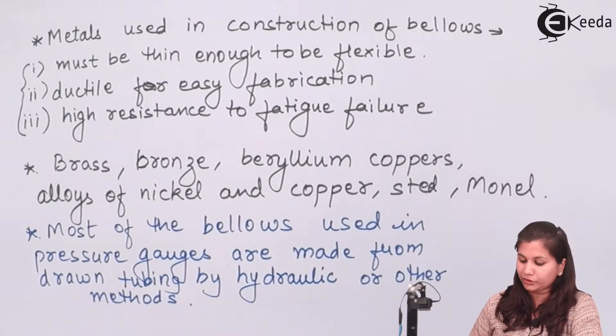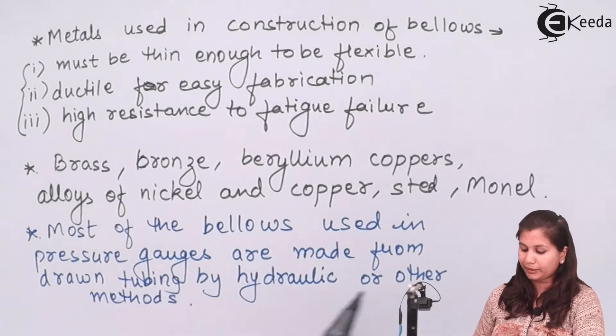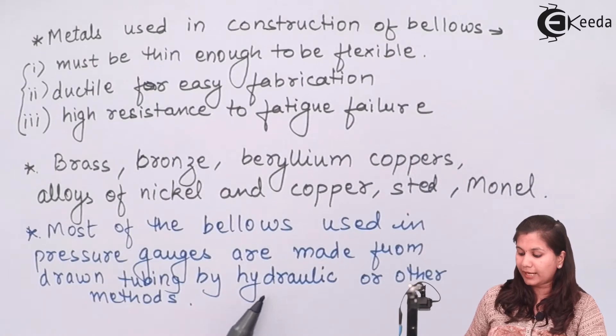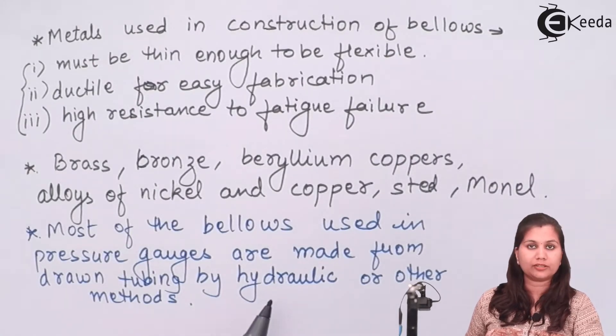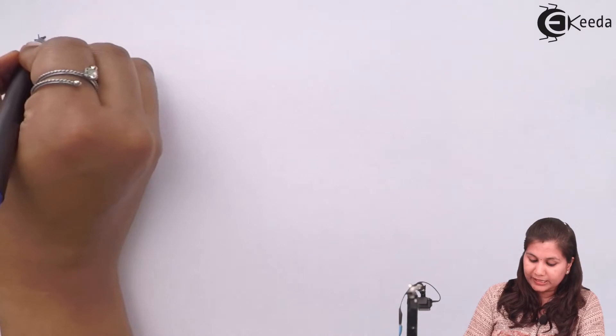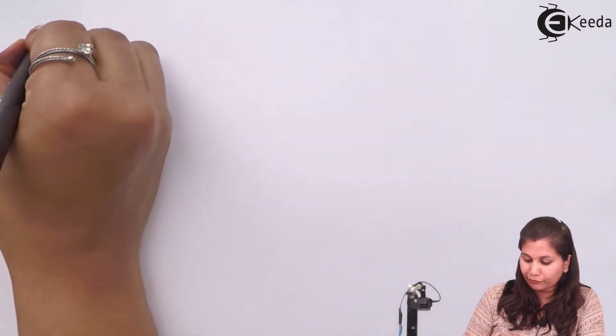Most of the bellows which are used in pressure gauges are made from drawn tubing by using hydraulic methods or other methods of rapid forming. When the fluid whose pressure we want to measure enters the bellow element, it is going to expand the bellow element. So the displacement of this bellow is given by a formula.